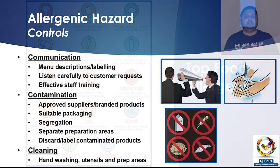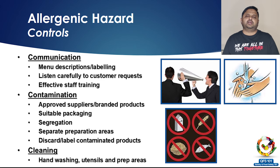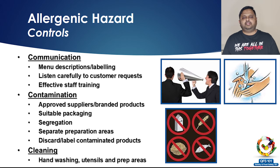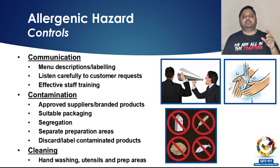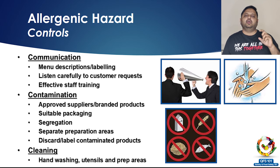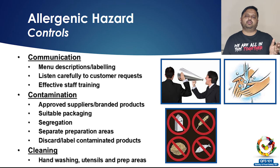To control allergenic hazards, the number one thing is proper communication. There must be clear communication between customers and food handlers — when taking orders, ask people if they have an allergy. If we are a retailer, we need to clearly display on retail boxes what allergens are present in the food item or in the production area, so people can make an informed choice about whether they want to eat that food.